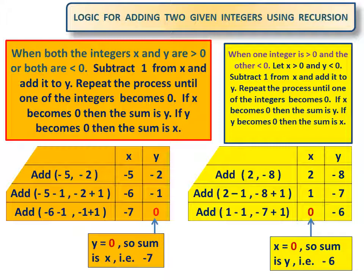Example: let x be -5 and y be -2. Subtracting 1 from x, it becomes -5 - 1 = -6. Adding 1 to y, it becomes -2 + 1 = -1. Again, subtracting 1 from x, it becomes -6 - 1 = -7. Adding 1 to y, it becomes -1 + 1 = 0. y is 0, so sum is x, that is -7.